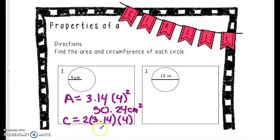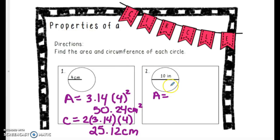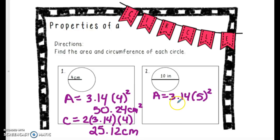That gives us 25.12 centimeters. For example two, we'll start with area. We need the radius, so we divide the diameter 10 by 2 to get 5. So we're going to have 3.14 times 5 squared. Put that into your calculator and you will get 78.5 inches squared.